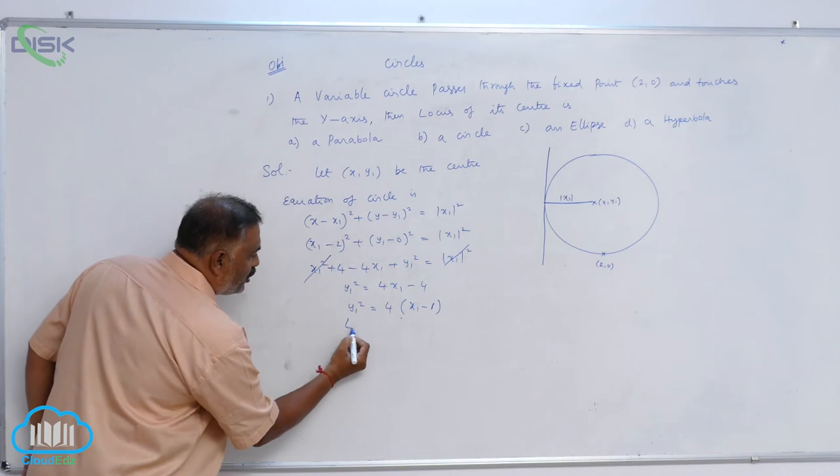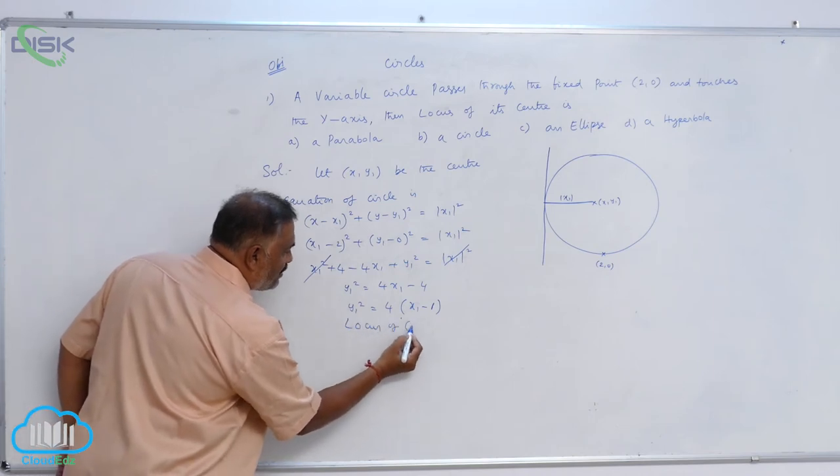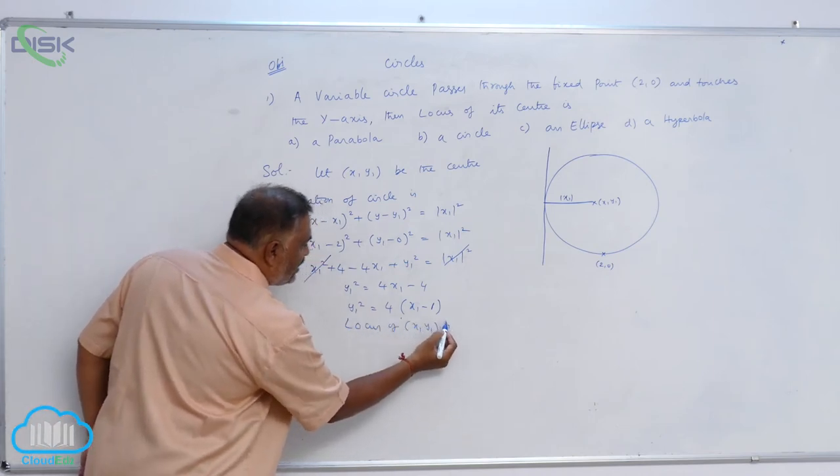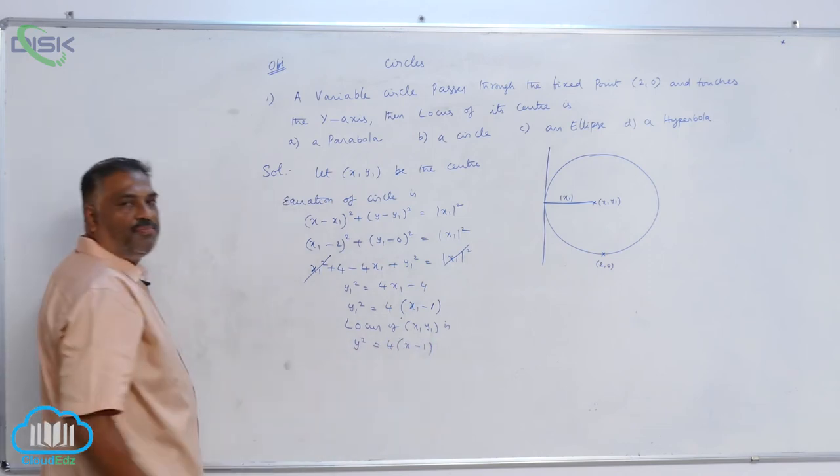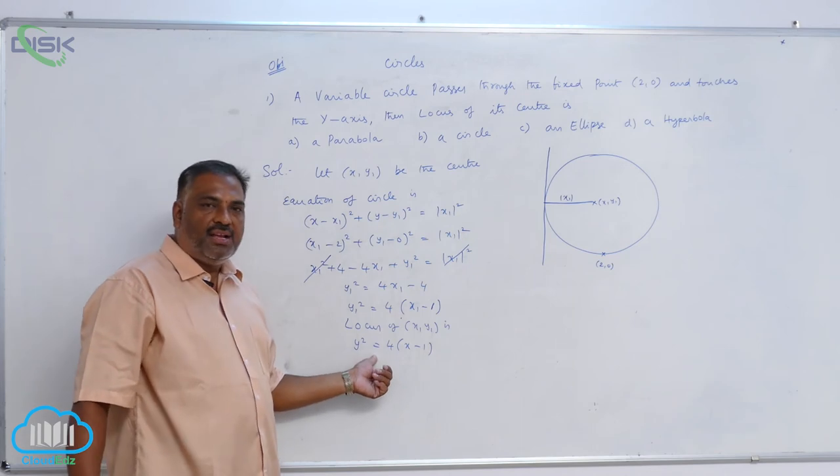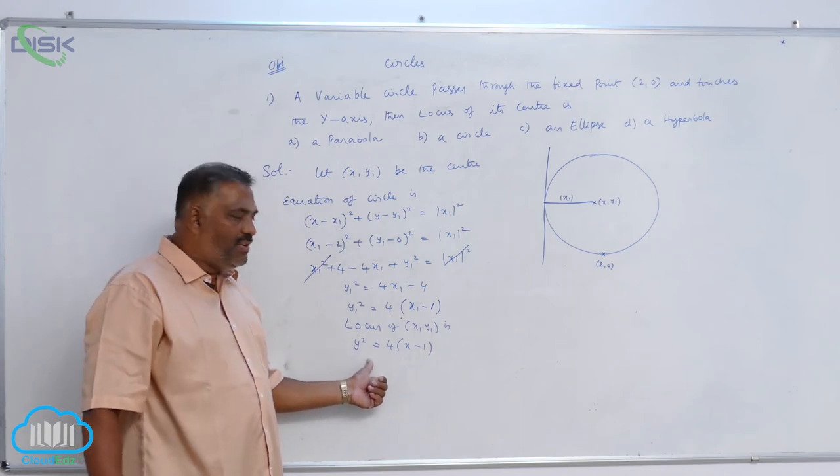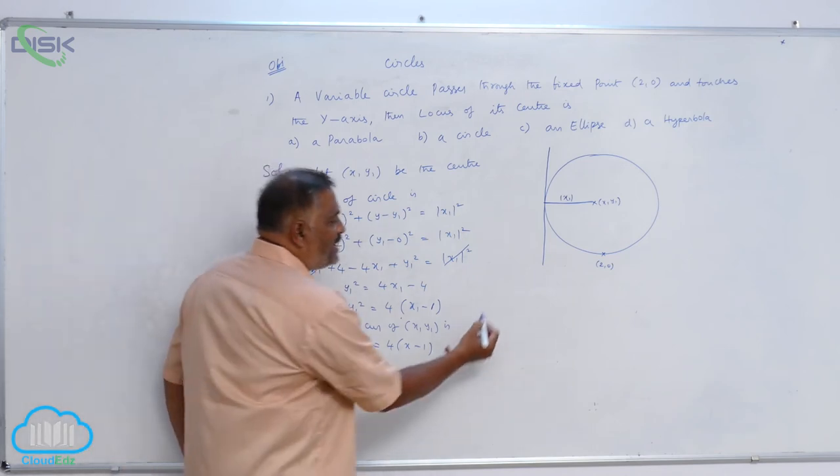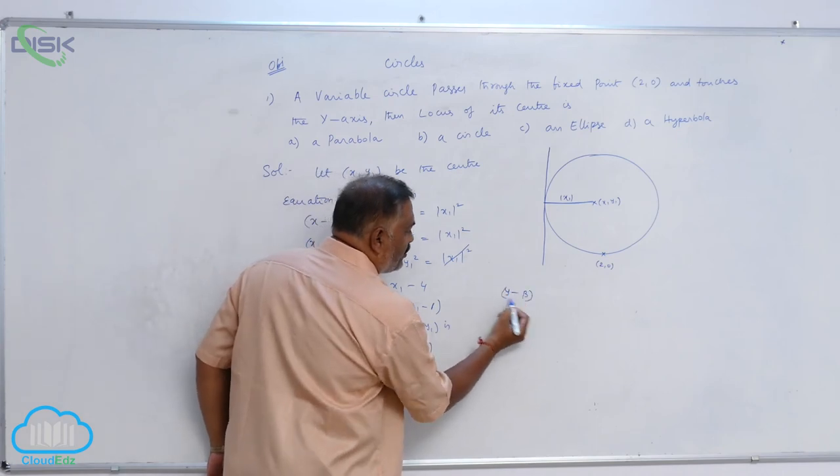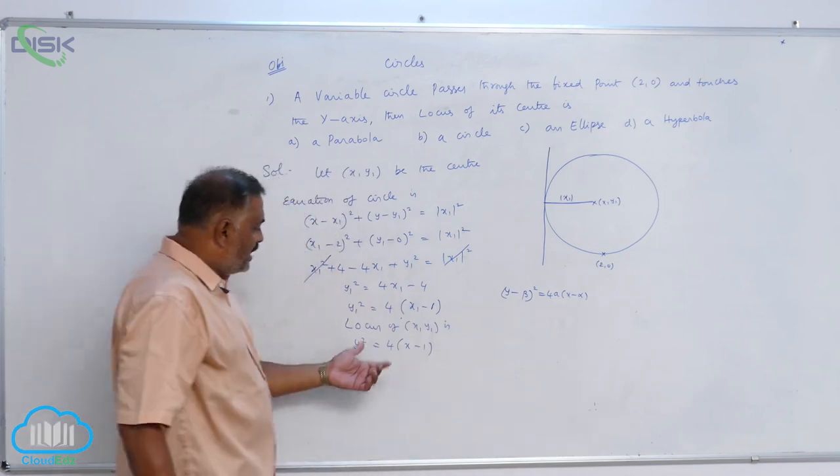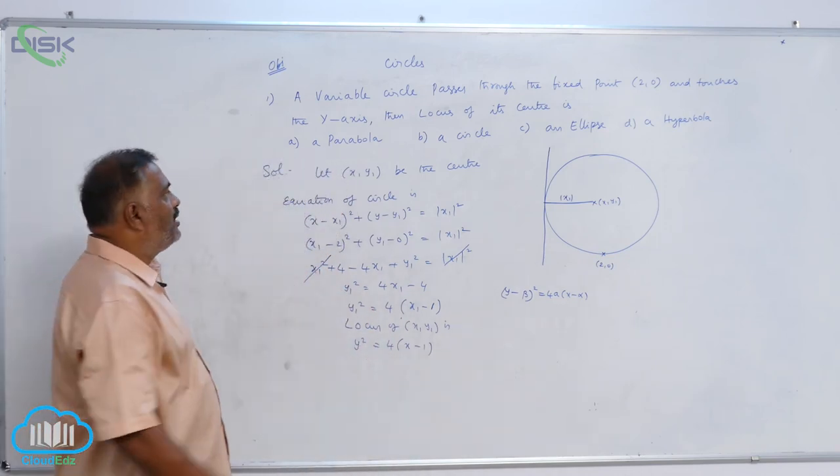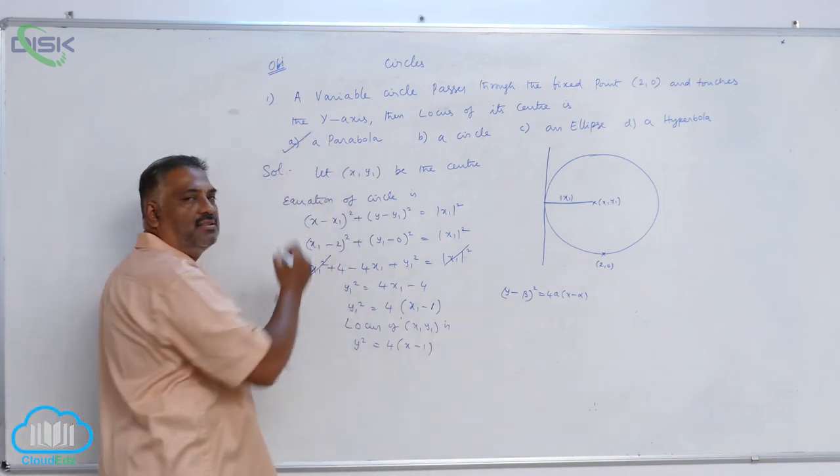Now locus of (x1, y1) is y² = 4(x - 1). We know that this is nothing but equation of the parabola which is in the format (y - β)² = 4a(x - α). So it is obviously a parabola. That is why option A is correct.